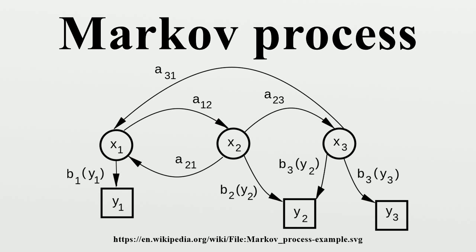Note that there is no definitive agreement in literature on the use of some of the terms that signify special cases of Markov processes. For example, often the term Markov chain is used to indicate a Markov process which has a finite or countable state space. But Markov chains on a general state space fall under the same description. Similarly, a Markov chain would usually be defined for a discrete set of times, although some authors use the same terminology where time can take continuous values. In addition, there are other extensions of Markov processes that do not necessarily fall within any of these four categories. Moreover, the time index need not necessarily be real valued, like with the state space, and there are conceivable processes that move through index sets with other mathematical constructs.